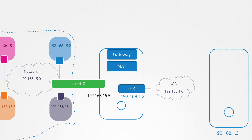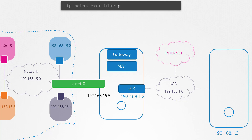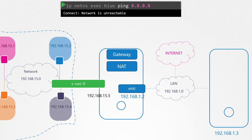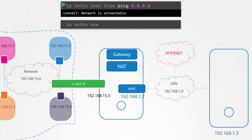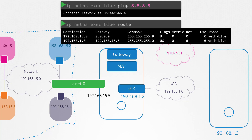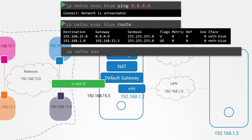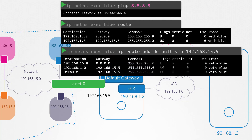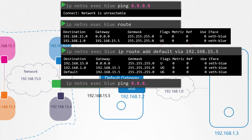Finally, say the LAN is connected to the internet and we want the namespaces to reach it. Pinging 8.8.8.8 from the blue namespace gives 'network unreachable' because the routing table only has routes to 192.168.1, not to the internet. Since these namespaces can reach any network the host can reach, we simply add a default gateway pointing to our host. The namespaces should now be able to reach the outside world.